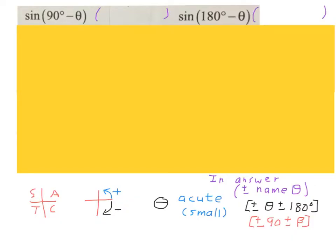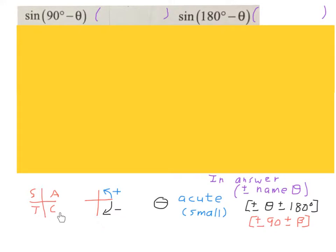Now converting some ratios. The first thing you need to remember is the CAST diagram, indicating in which quadrant each ratio is positive. In the first quadrant all ratios are positive; sine is positive in the second quadrant; tan is positive in the third quadrant; and cosine is positive in the fourth quadrant.